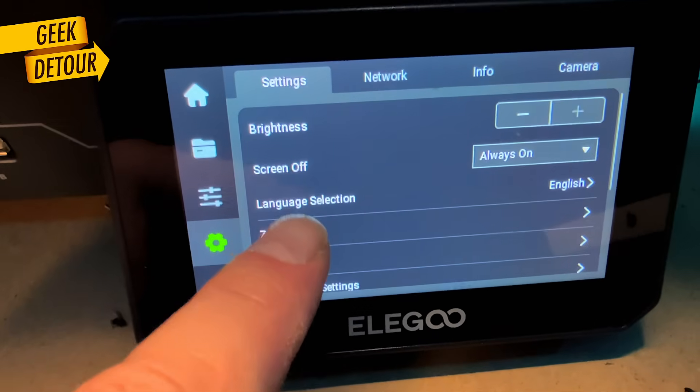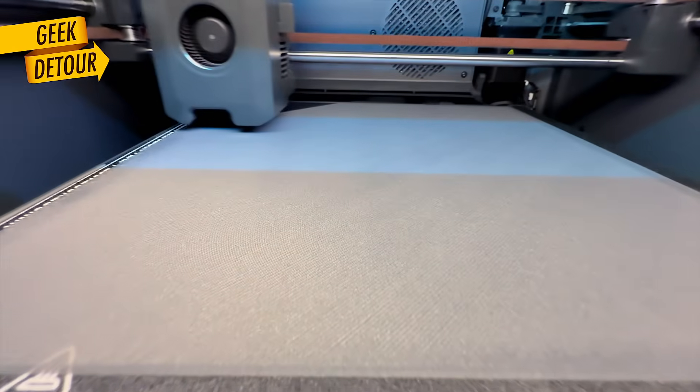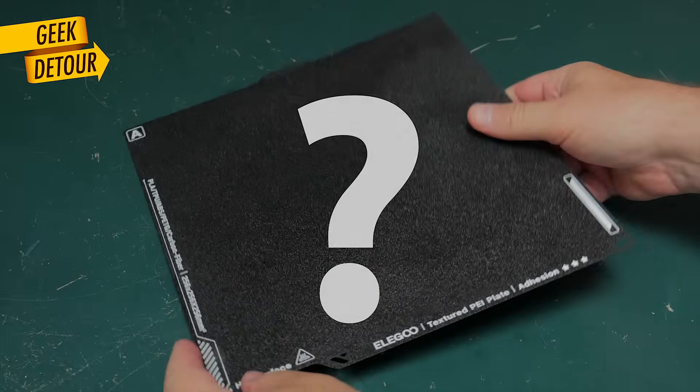Adhesion. Besides the offset, there is a small secret behind a perfect first layer. Do you know what it is?